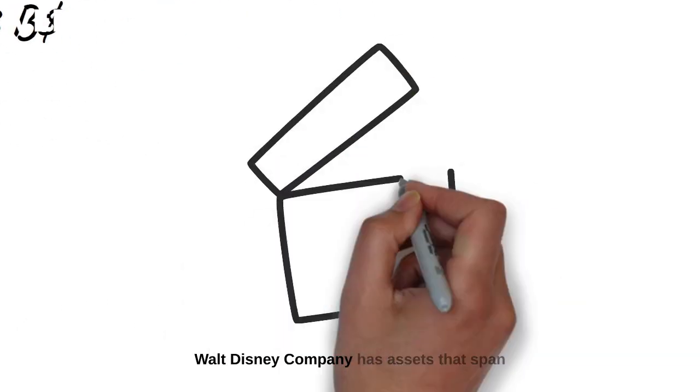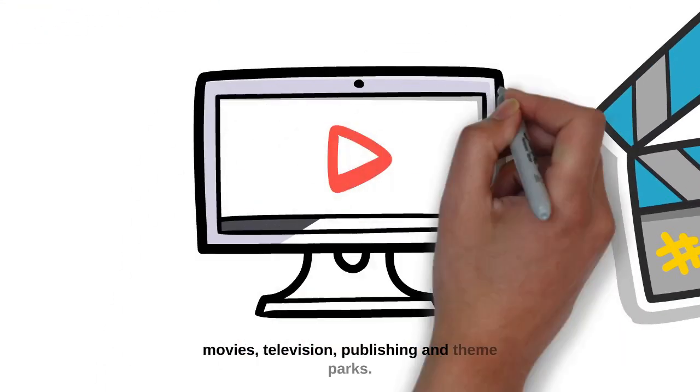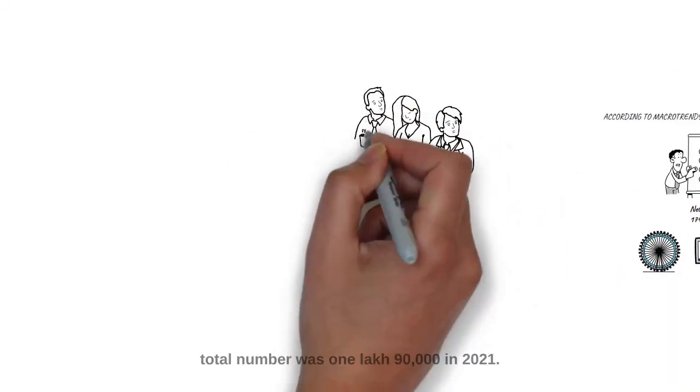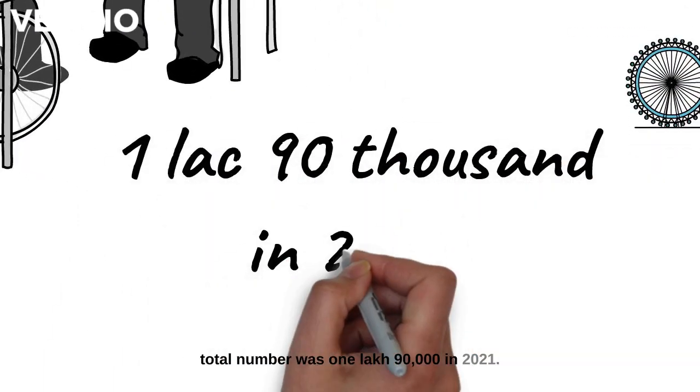Walt Disney Company has assets that span movies, television, publishing, and theme parks. Now, talking about working employees in Disney, their total number was 190,000 in 2021.